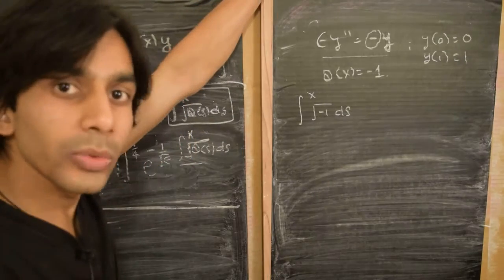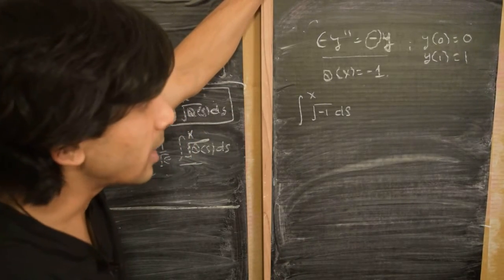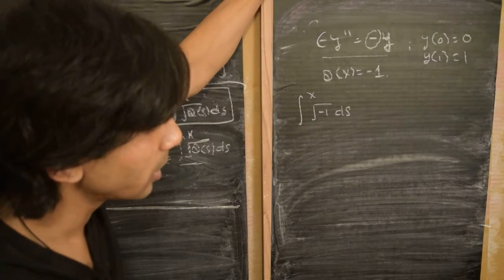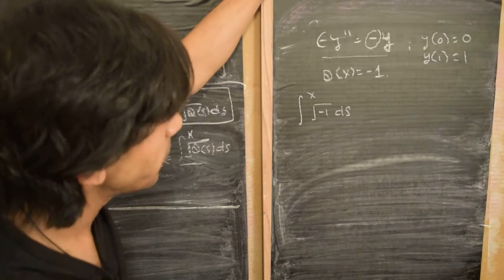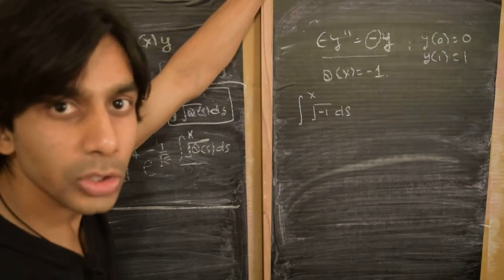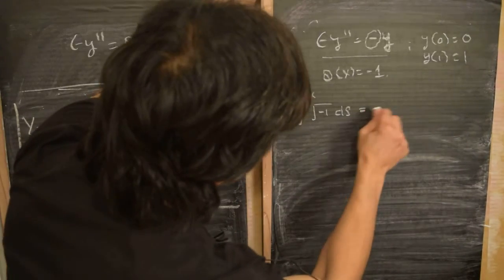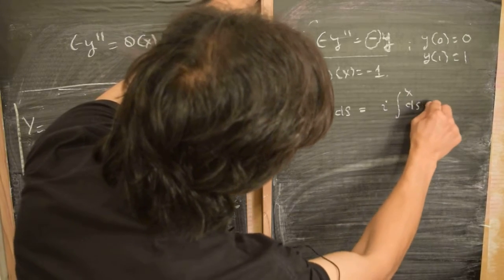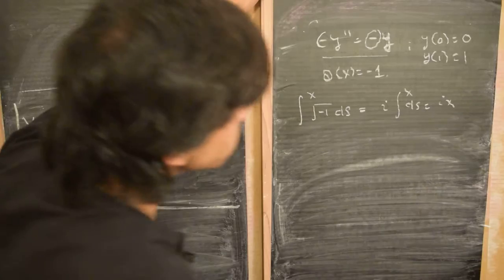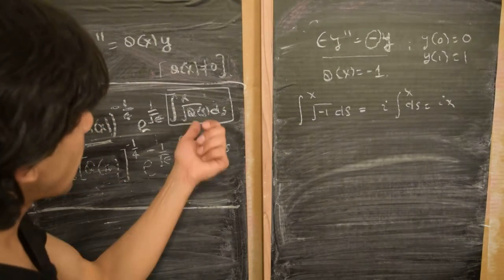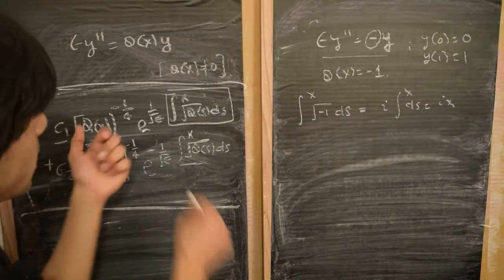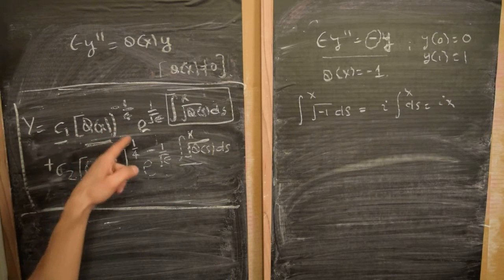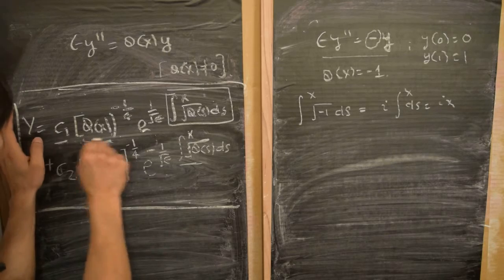The square root of −1 is the unit imaginary number i. We'll be talking more about complex numbers very soon, but for now we take √(−1) = i. So this integral gives us i · ∫dx over x, which is just i · x. This holds for both exponentials — one with a plus sign and the other with a minus sign.